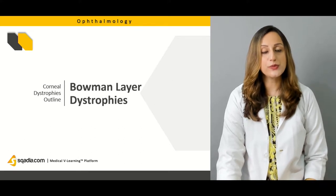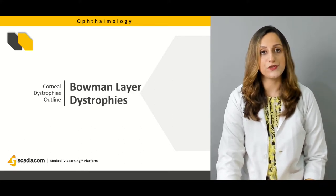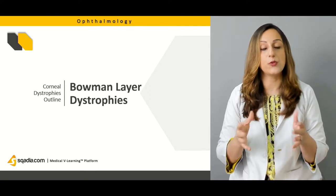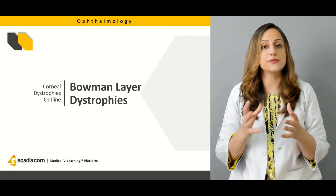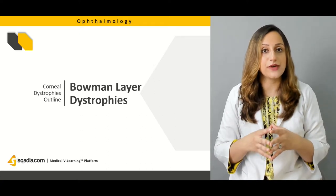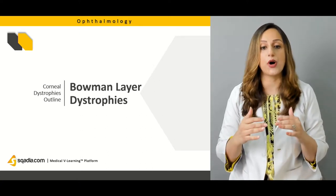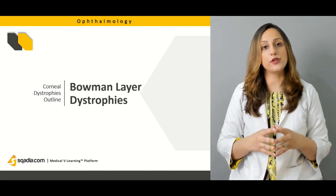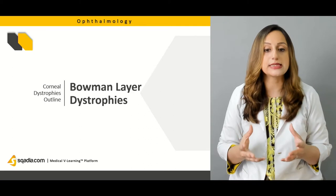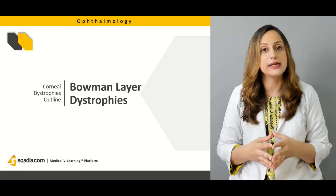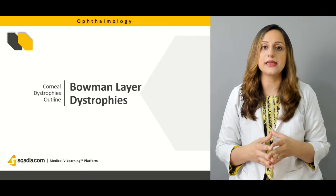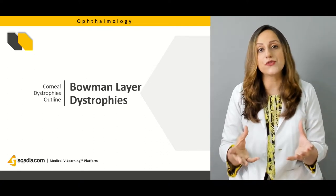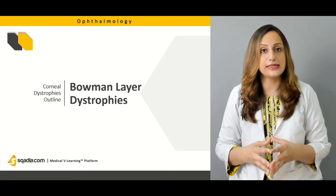Moving on, we'll be discussing the Bowman's layer dystrophies. Histologically, the cornea has an epithelium — a stratified squamous type — resting upon Bowman's layer. Mutations involving Bowman's layer result in corneal opacification, haziness, and cloudiness of the cornea observed in patients.